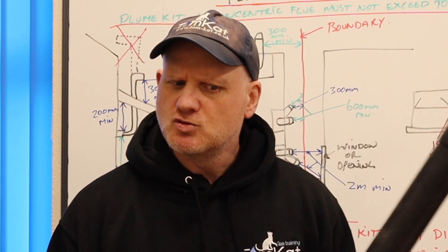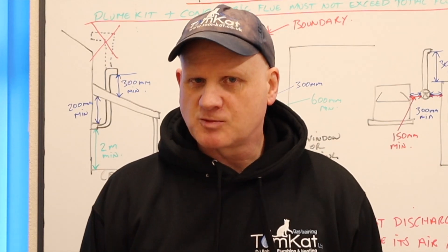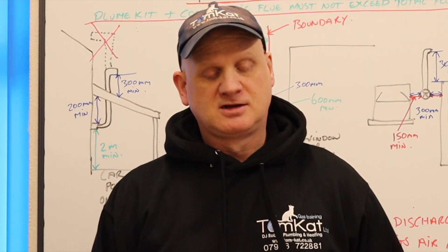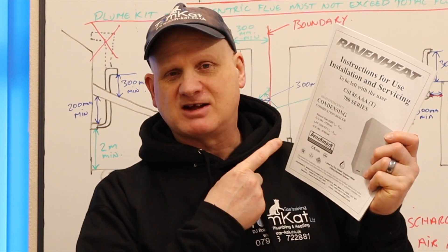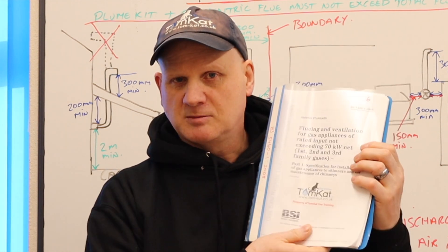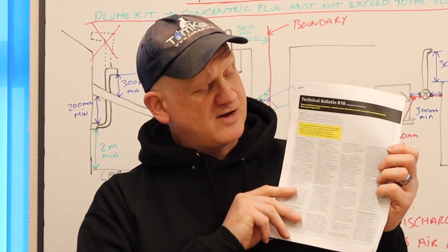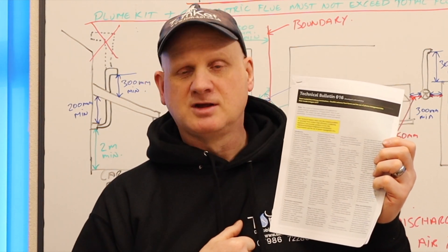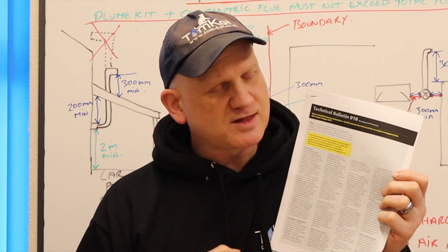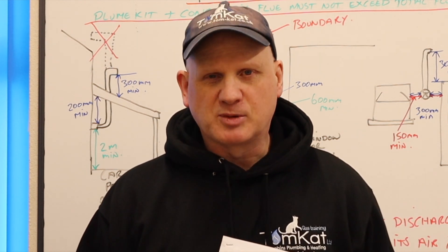Now, the documents what might help us out with using plume management kits are, of course, the manufacturer's instructions, J2 of the building regulations, BS 5440 part 1, and finally, Gas Safe Technical Bulletin 016. So they're the documents that can always help you out when you're looking at positionings or installation of plume management kits.